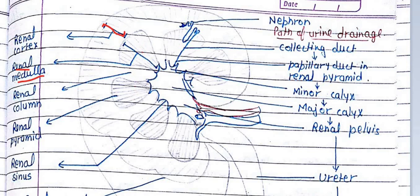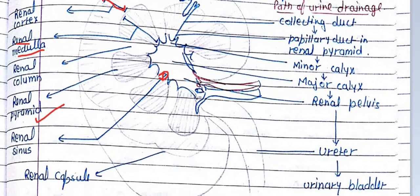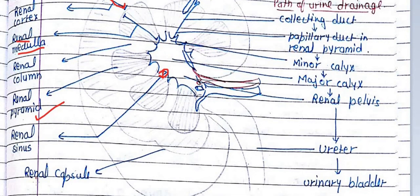The middle portion of the medulla has a triangular shape structure called the renal pyramid. After the renal capsule, which closes the kidney from outside, we have the cortex and the medulla portions inside.